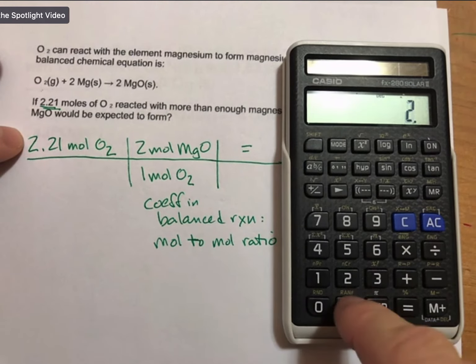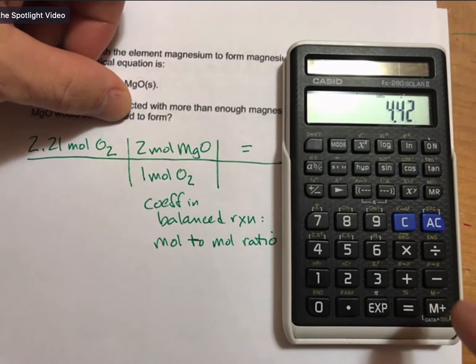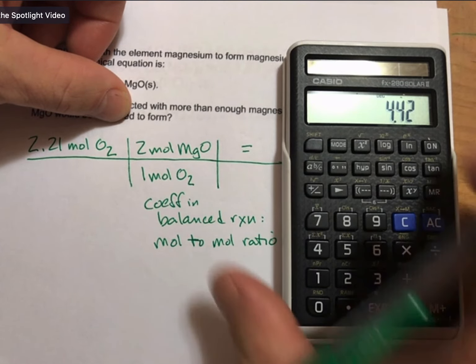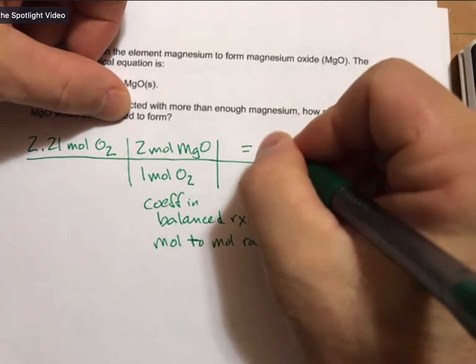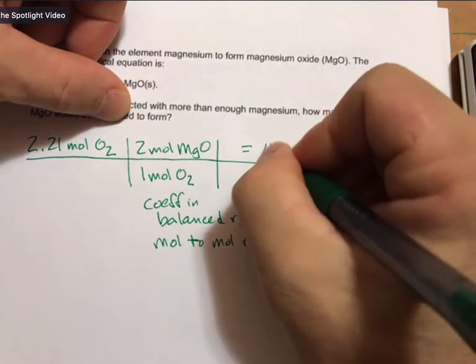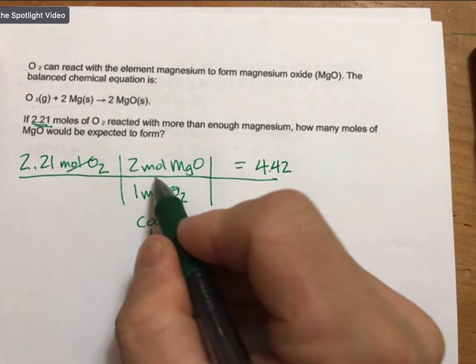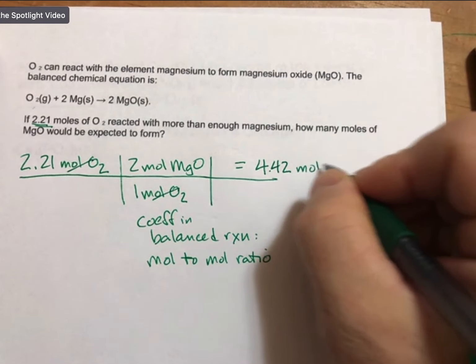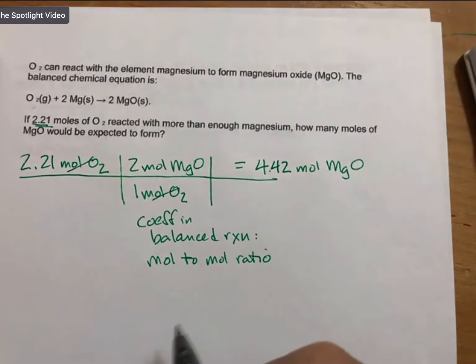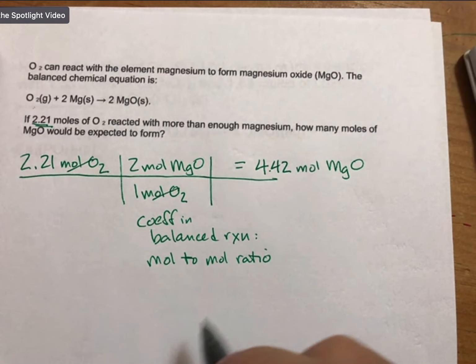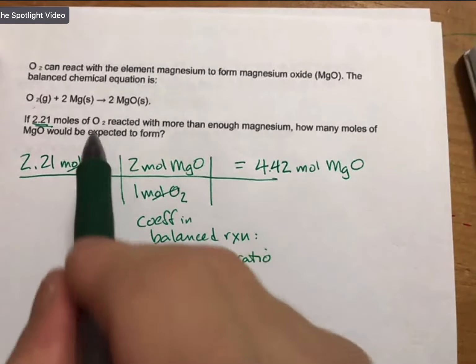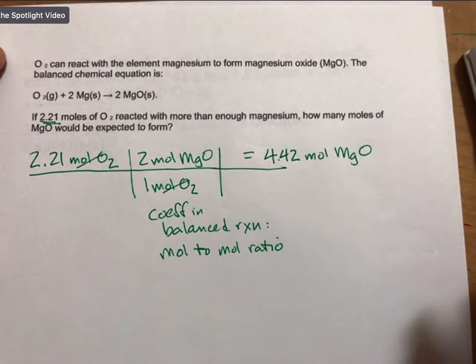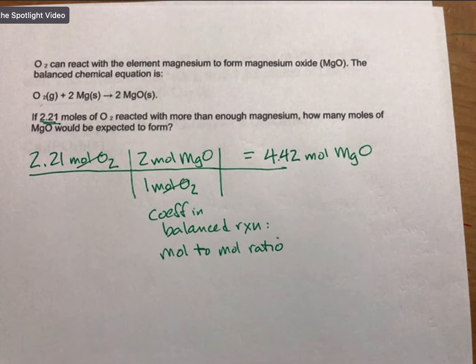So 2.21 times two gives 4.42. Units-wise, the moles of oxygen cancel out, and the answer must have units of moles of magnesium oxide, MgO. The answer is 4.42 moles of MgO. We'll be doing a lot more of this after the break.